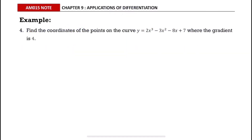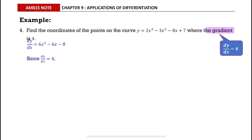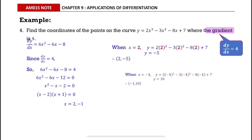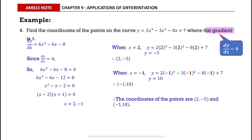In this example we want to find the coordinates of the points where the gradient is 4. The gradient here means dy/dx equals 4. So differentiate the given equation first, then equate it with 4, simplify, factorize and solve for x, then find the value of y for each value of x. The coordinates of the points are (2, negative 5) and (negative 1, 10).